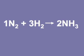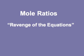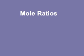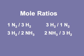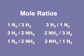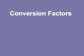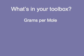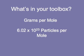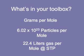Here's our balanced equation again. The mole ratios use the coefficients from the balanced equation: for every 1 nitrogen there are 3 hydrogen, or vice versa; 3 hydrogen to 2 ammonia, or vice versa; 1 nitrogen to 2 ammonia, or vice versa. These mole ratios are the central issue in stoichiometry. The other conversion factors you need are: grams per mole from the periodic table, Avogadro's number (particles per mole), and molar volume of gas at STP.